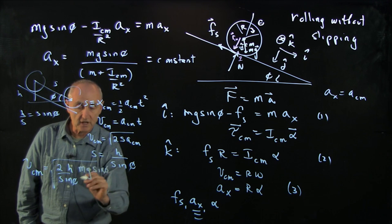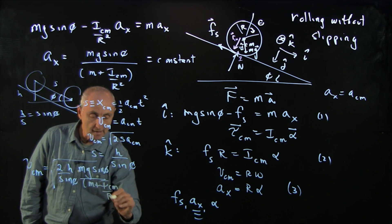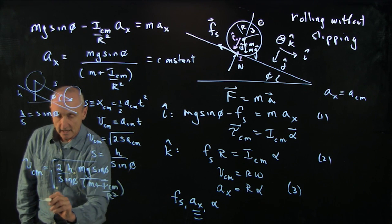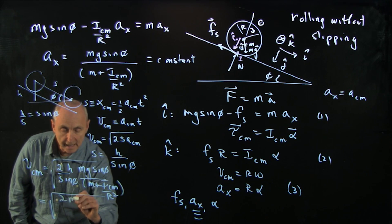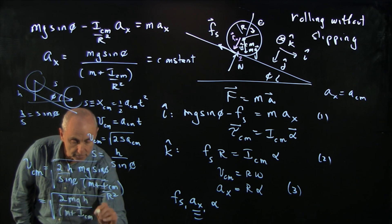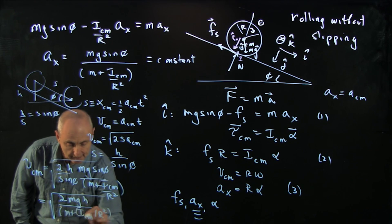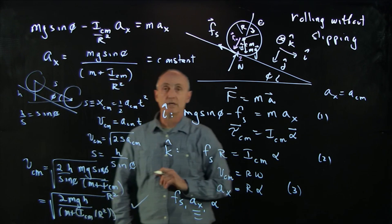mg sine phi over m plus i cm over r squared. And so we get the square root of 2mgh over m plus i cm divided by r squared. And this agrees with our energy method.